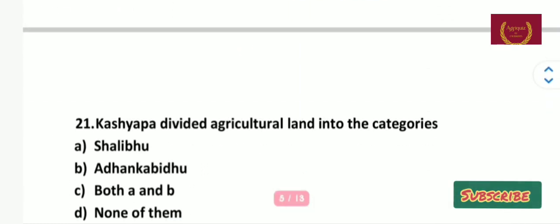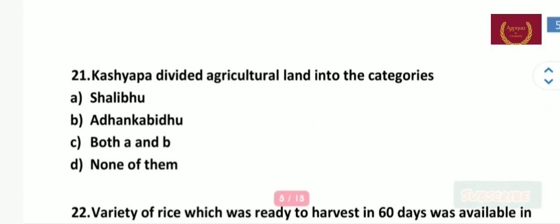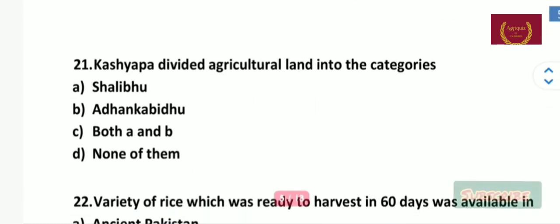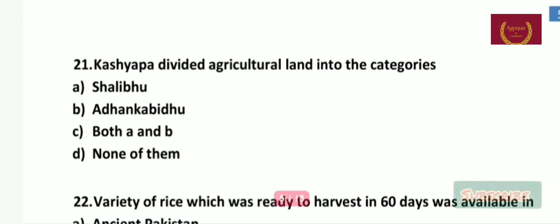Question number 21: Kashyap divided agricultural land into which categories — Salibu, Adhankabidu, both A and B, or none of them? The right answer is both A and B.